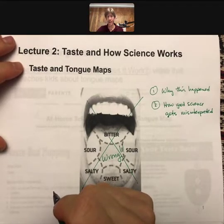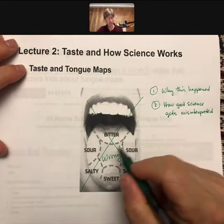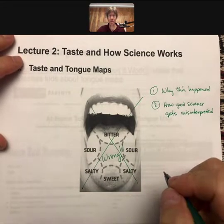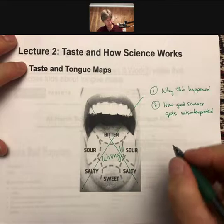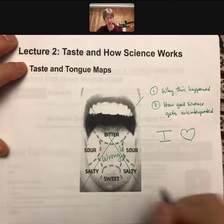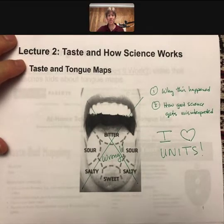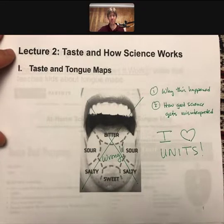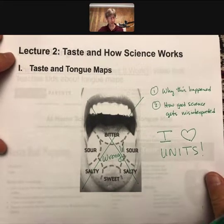We're going to talk about how we do science to make sure this, as much as possible, doesn't happen. The short answer is: you have to use units. I need a bumper sticker that says 'I heart units,' because we're going to be dealing with graphs that don't have units, and then we'll talk about what units we need and how they work.